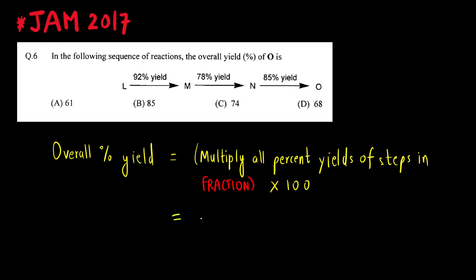So how we will do this: 92 percent - percent means divide by 100 - 92 divided by 100 is 0.92. So 0.92 multiplied by 78 percent will be 0.78, into 85 percent is 0.85.